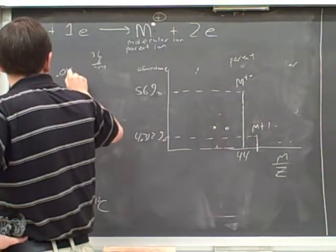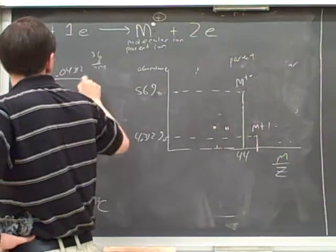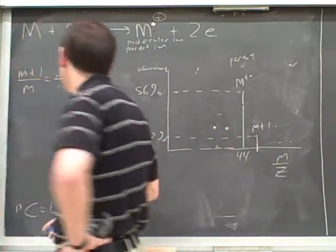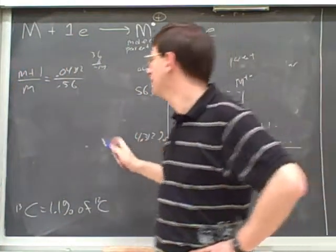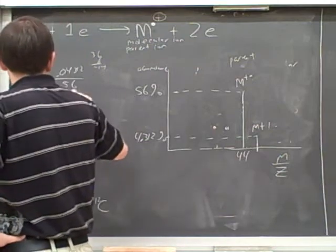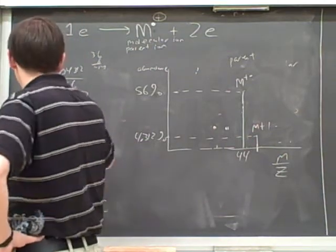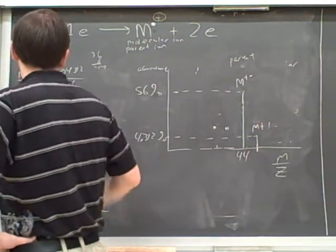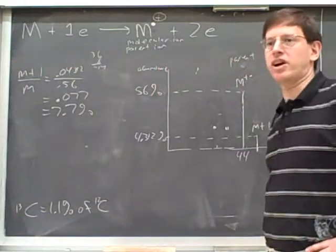Well, here that ratio is 0.04312 divided by 0.56. It's safest to translate these into decimals. This came out to be 0.077, which is 7.7%. Well, that's an indicator of 7 carbons.